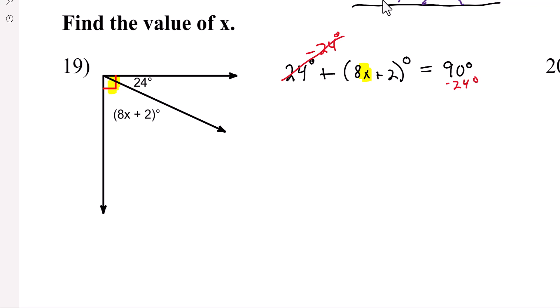And then we're going to simplify. So now we have, I'm going to distribute that. So 8x plus 2 degrees is equal to, I believe that's 56. So 10 subtract 4 is 6. We had to borrow. Oh, see, it's a good thing I checked.